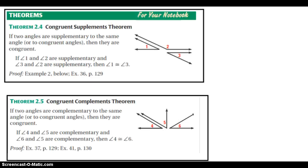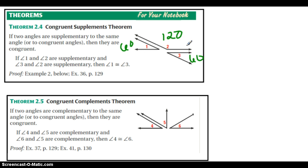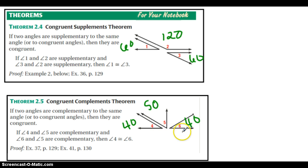My next two theorems are the congruent supplements theorem and the congruent complements theorem. We're only going to prove the supplement theorem, but we're going to be able to use both. All they're saying is this: if 1 and 2 are supplementary — if you just thought about it mathematically, if this is 60 degrees, this would have to be 120. Now if 3 and 2 are supplementary, then this has to be 60. If that's the case, then 1 and 3 must be congruent. Same goes with complementary: if this was 40 degrees, this would be 50. And if these two are complementary, this would be 40, and therefore 4 and 6 have to be congruent.